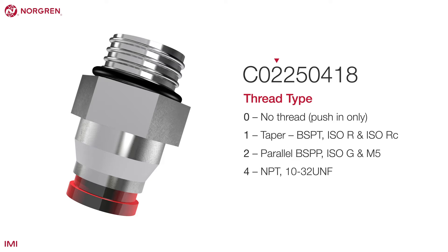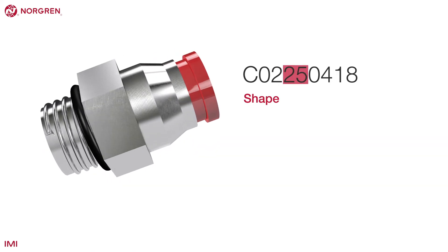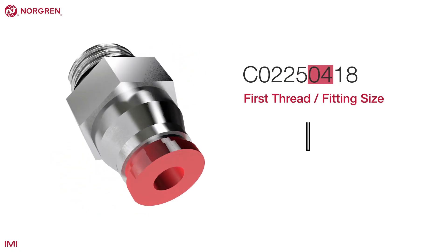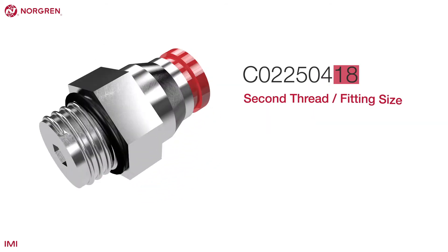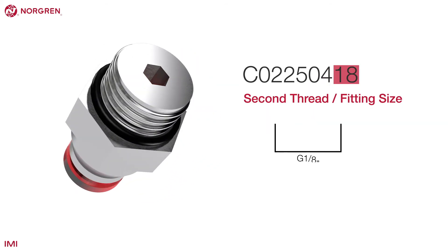Digits 4 and 5 tell us the shape — this example is straight. Digit 6 and 7 tell us the first thread fitting size, in this case 4mm PIF. And finally, digits 8 and 9 tell us the second thread fitting size, which is G 1/8th of an inch thread.